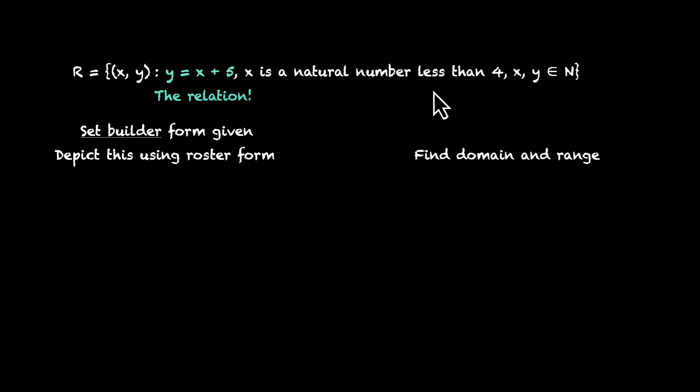And what about this? x is a natural number less than four. Well, this is putting a condition on x. This is not letting all the natural numbers play. This is saying, if you're four or more than four, you're not allowed for this relation. So this will give us the domain of x.